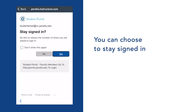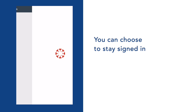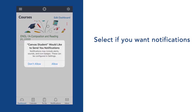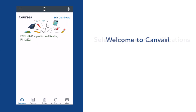The next screen will prompt you to stay signed in. You can select Don't Show This Again here if you choose. You can also choose if you want to allow notifications. And now you're all set to navigate your classes on your mobile device.